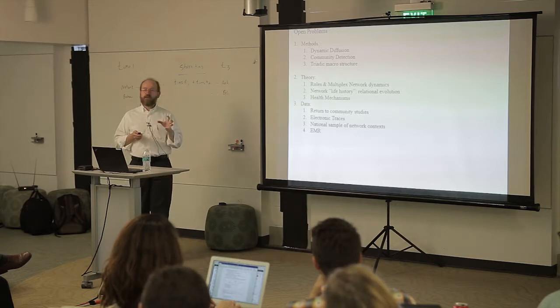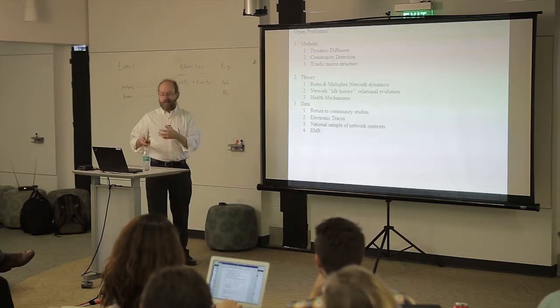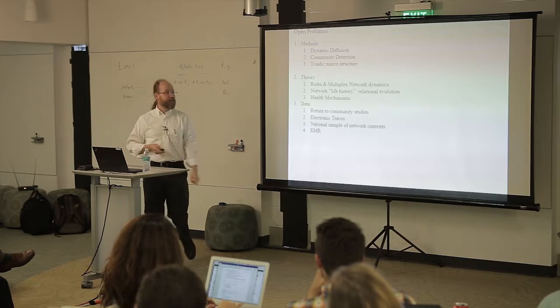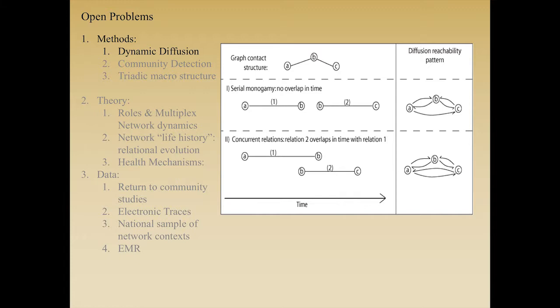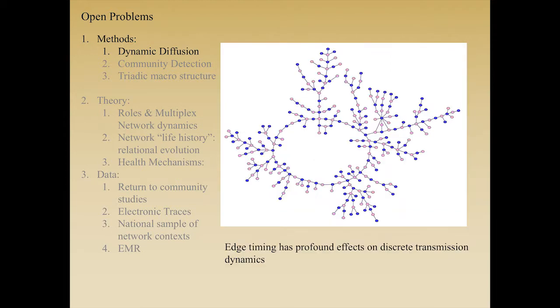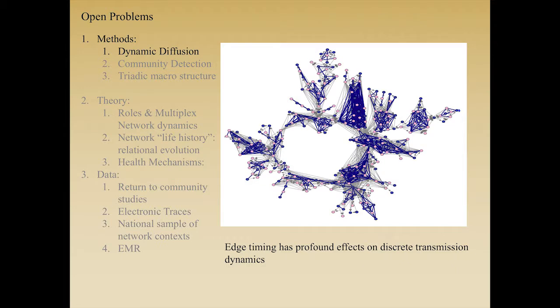Some of these other questions I don't think people are really focusing on as much. I'm going to revisit this idea of dynamic diffusion — if you have time-ordered relations, the set of paths over which a diffusion can pass are changed dramatically. The Add Health network, if treated as if it were all at one time, everyone could reach everyone else. But once you respect time, only about 40% of the possible linkages can actually be made because the timing breaks the network into little tiny chunks around concurrent edges.